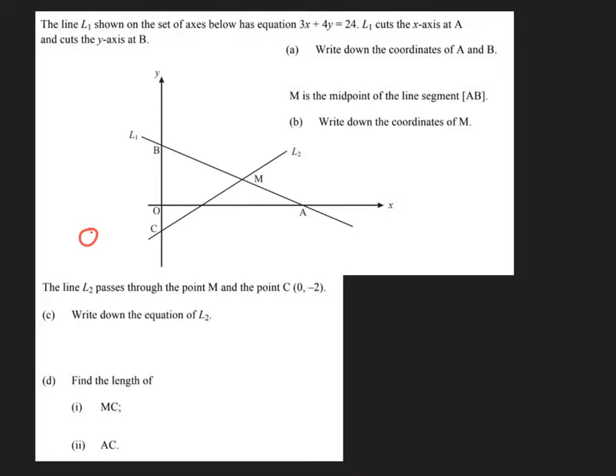Question 3 is all about geometry and straight lines. In part A we are asked to work out the coordinates of A and B, and we're given the equation of line L1 which is 3x plus 4y equals 24.